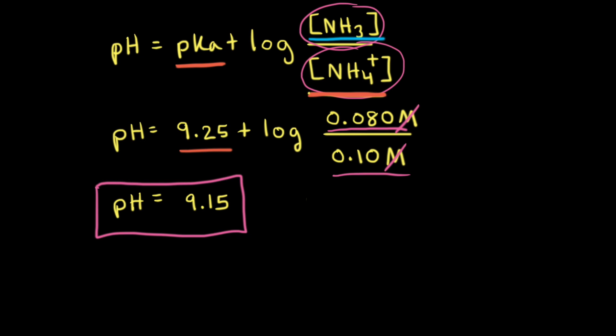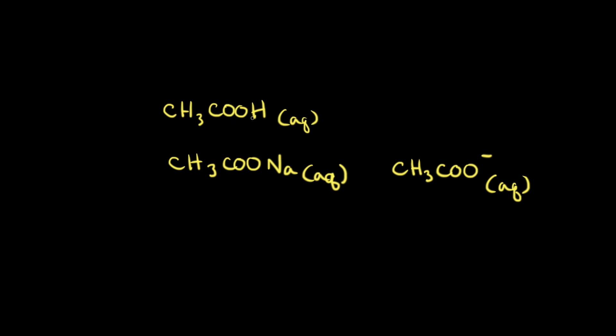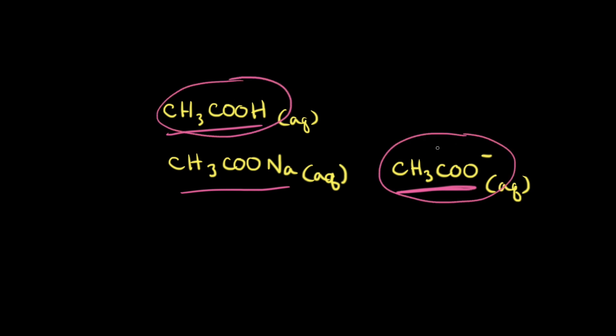This problem started with a weak base and a salt containing the conjugate acid to that weak base. It's also possible to make a buffer solution starting with an aqueous solution of a weak acid and adding a salt that contains the conjugate base. For example, we could start with acetic acid and add sodium acetate, which is a soluble salt that dissociates completely to produce sodium cations and acetate anions. Since we would have a significant amount of both a weak acid and its conjugate base, we would have a buffer solution.